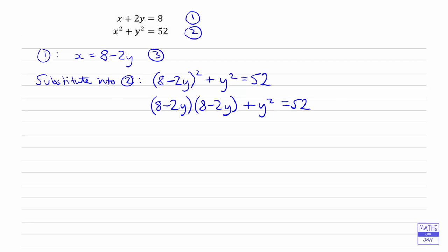Let's multiply out those brackets. 8 times 8 is 64. Then we've got 8 times negative 2y, and we've got that twice, so it's 2 lots of minus 16y. That's minus 32y. Then negative 2y squared is going to be plus 4y squared because a negative multiplied by a negative is a positive. Then we've still got the plus y squared equals 52.